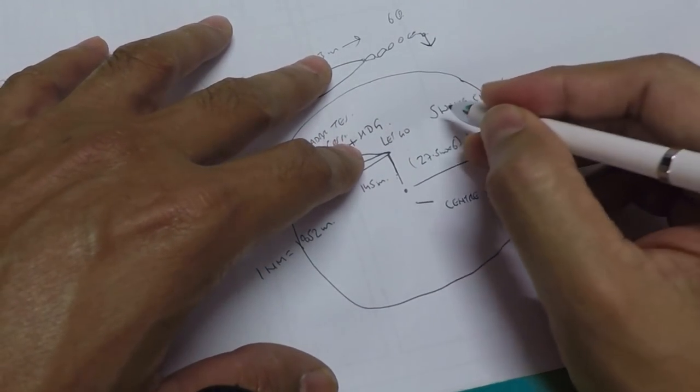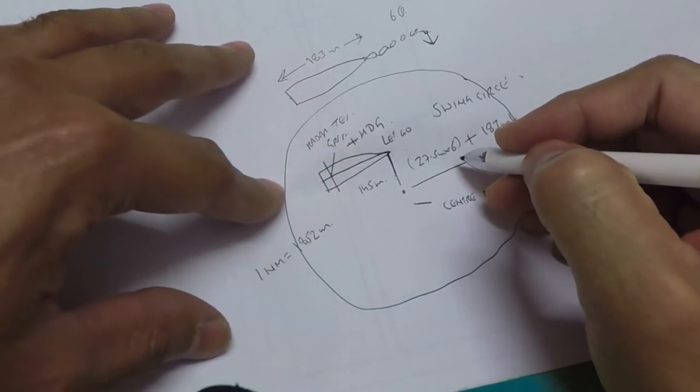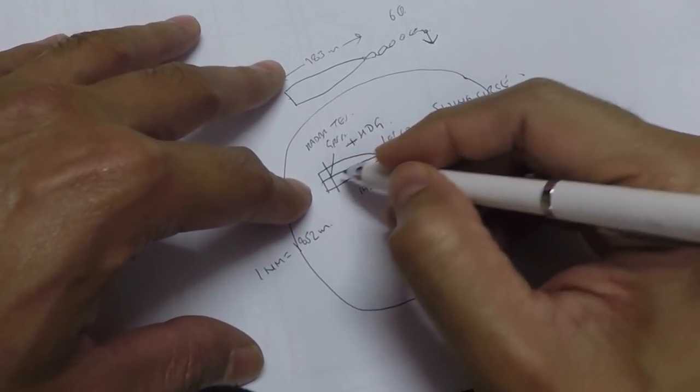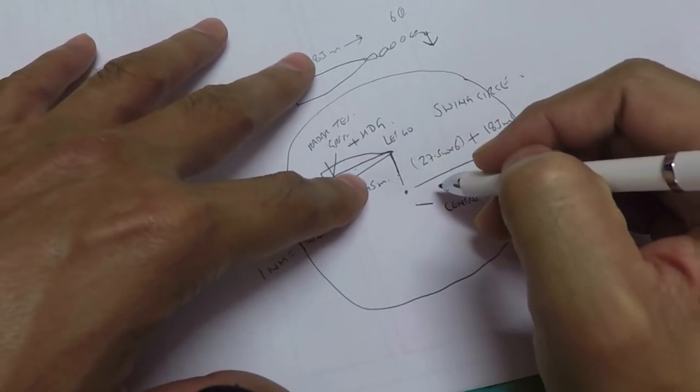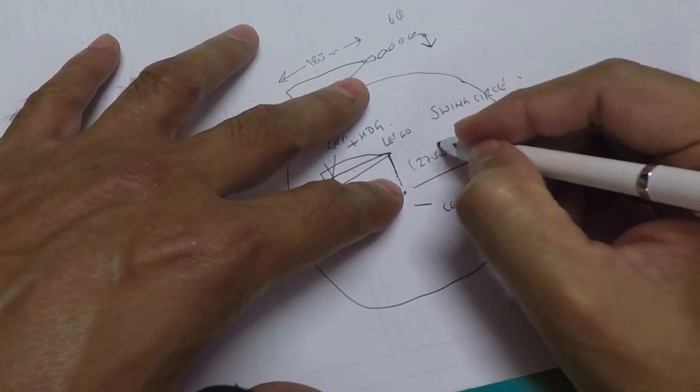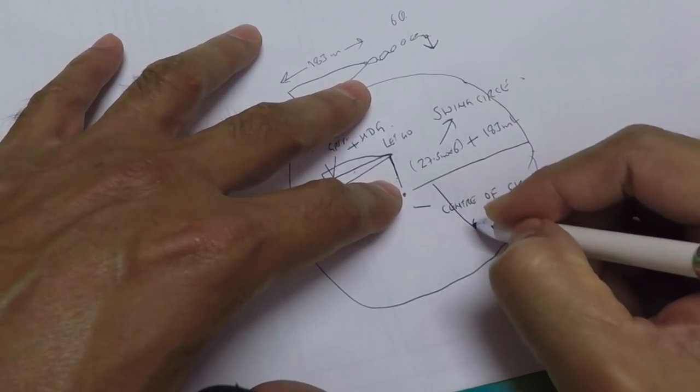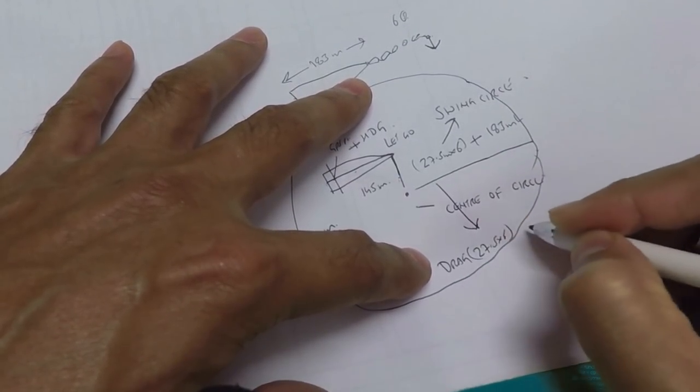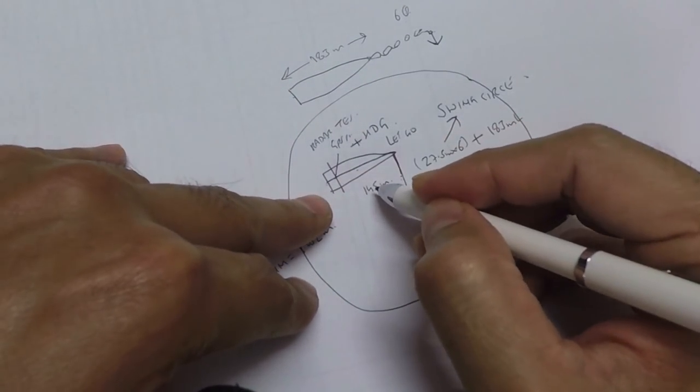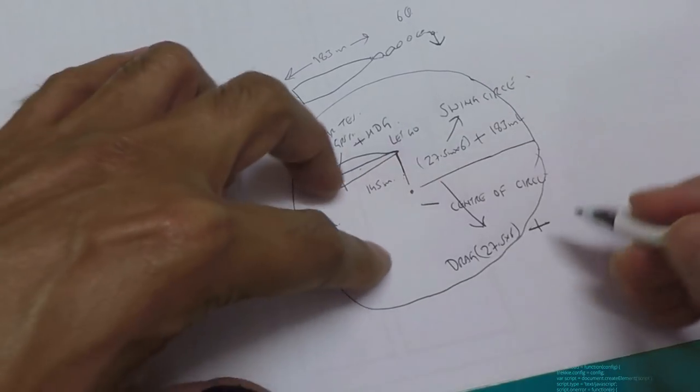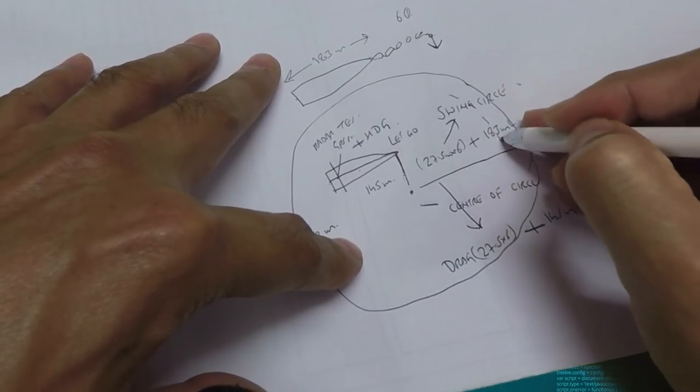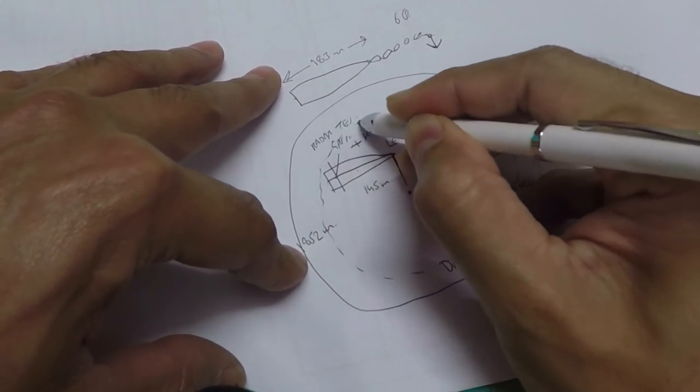The drag circle is always small. Why is it small? Because you always get the position from the bridge, you don't get the position from the back. So when you make a drag circle, you will take the same thing, 27.5 into 6, but the difference is 183 meters, the whole ship you will not take the length. You will take the length 145 meters which is the bridge distance plus 145 meters. So the drag circle is small.